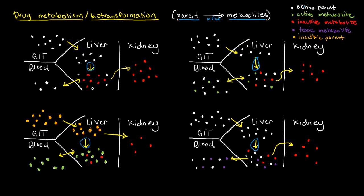We have white for the active parent, and you see that white is almost in the entire screen here, because the assumption is that most drugs we take originally are working — otherwise, why would you take them? There are green molecules called active metabolites, meaning they're no longer the original molecule but have been altered by enzymes and still do what the original parent does — the therapeutic benefit. There are inactive metabolites in red, meaning they have been metabolized, changed by your enzymes, and are not doing anything anymore. Then there are toxic metabolites in violet, meaning they have been changed but can harm your body.